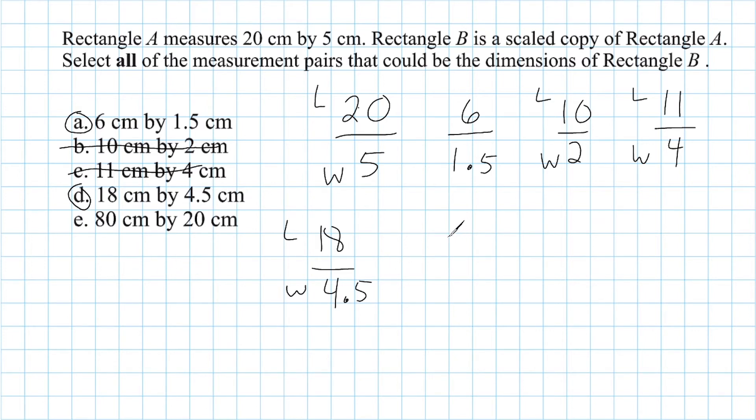And for choice E, we have a length of 80 and a width of 20. And we would say that this rectangle's length is exactly 4 times greater than its width. So E is an option that we should also select, because E is going to be similar to rectangle A.